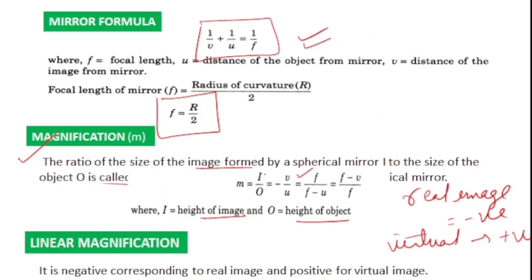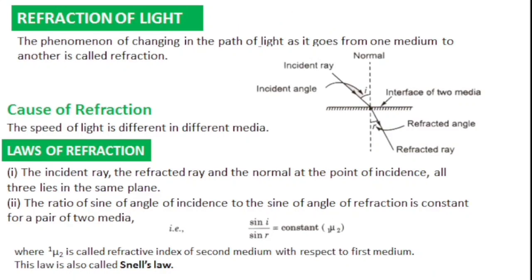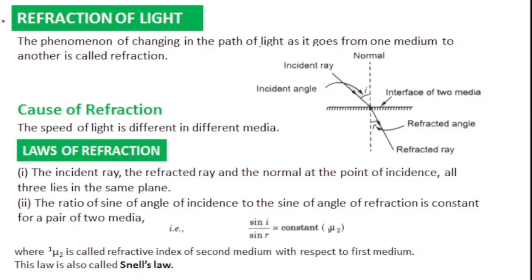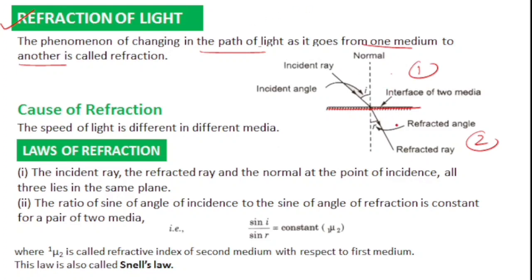Now the first topic in the syllabus is refraction of light. Refraction is the phenomenon of change in the path or direction of light when it goes from one medium to another. When a light ray travels from one medium to another it changes its path — this is called refraction. The main cause of refraction is that the speed of light is different in different media — when the medium changes, the speed of light also changes.